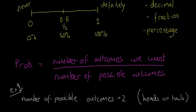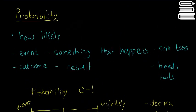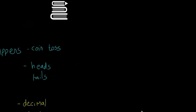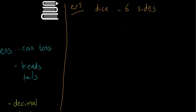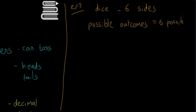Example two — rolling a dice. Coin tosses and dice rolls are going to be really common examples in probability questions. When you roll a dice there are six sides numbered one through six, so the number of possible outcomes is six. Each of those outcomes — one, two, three, four, five, and six — is equally likely.